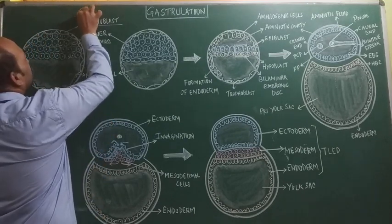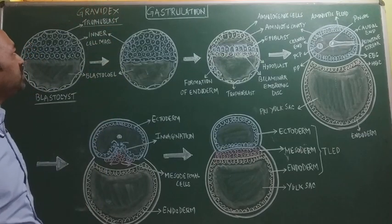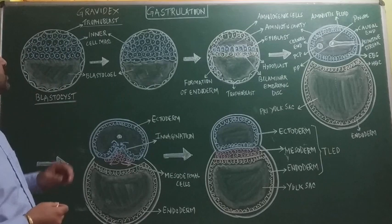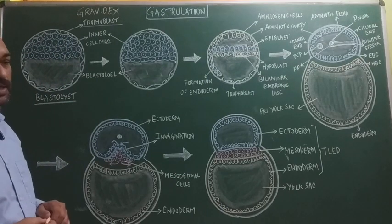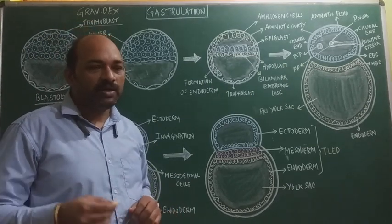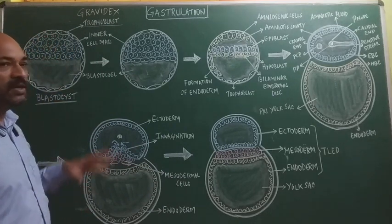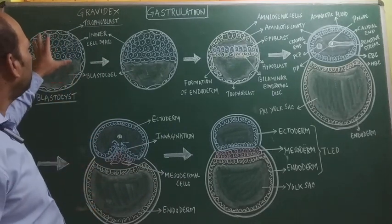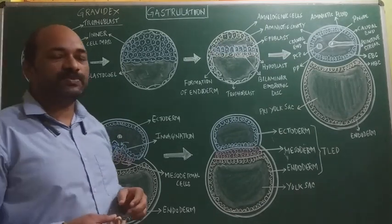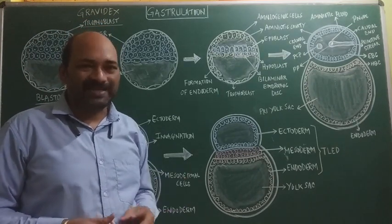There is a test called the Gravitex test which confirms pregnancy in the human female. The cytotrophoblast is responsible for the formation of the yolk sac or the chorion. Once the blastocyst is embedded into the endometrium, the syncytiotrophoblast cells are responsible for the formation of the chorionic villi, which results in the formation of the placenta.